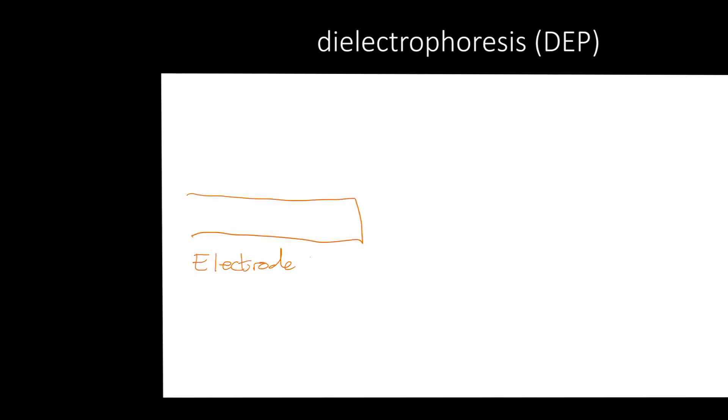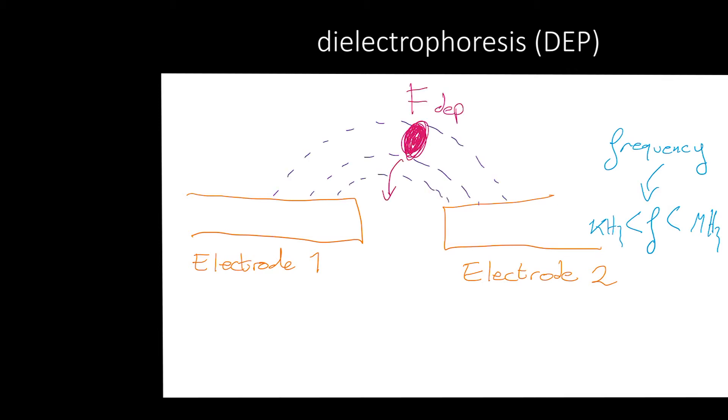By using a technique called dielectrophoresis, polarizable particles can be attracted to a non-uniform AC electric field. The smaller the distance between the electrodes, the greater the trapping force.